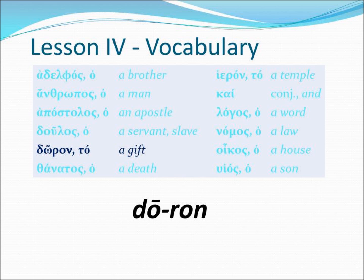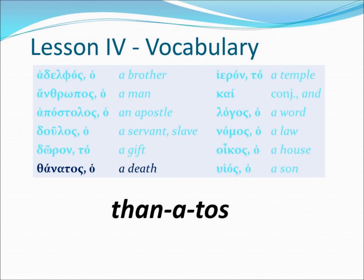If we see the phrase to doron, it would be 'the gift.' Our next vocabulary word is thanatos. The article is a masculine article. Thanatos is translated meaning 'a death.' Ho thanatos would be 'the death.'